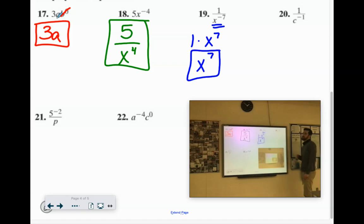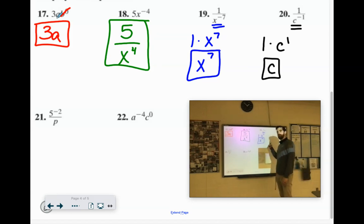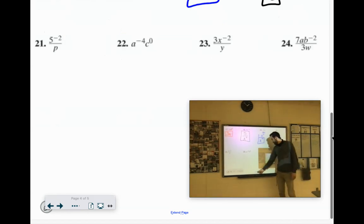1 over C to the negative 1st. I have a negative exponent on the bottom, so we're going to bring it up to the numerator and multiply it. 1 times C to the 1st is just C to the 1st, but we just write that as C. Did you see what I did there? I know, I know. I'll wait for the laughter to die down a little bit. Ready? Okay.